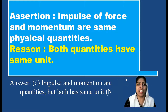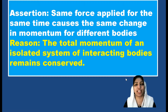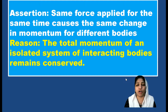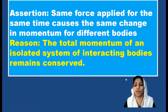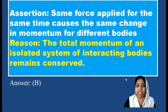The same force applied for the same time causes the same change in momentum for different bodies. This is correct because, by Newton's second law of motion, the rate of change of momentum is directly proportional to the applied force. So the assertion is true. The reason given is that the total momentum of an isolated system of interacting bodies remains conserved — that is the law of conservation of momentum, which is also a correct statement. However, assertion and reason are independently true but the reason does not correctly explain the assertion. So option B is the answer.